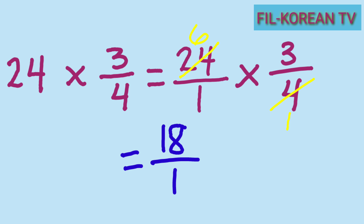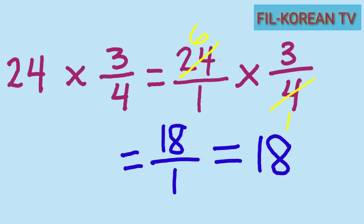The answer is 18 over 1. This is an improper fraction, so we need to simplify it. We divide the numerator 18 by the denominator 1: 18 divided by 1 equals 18. So the final answer is 18.